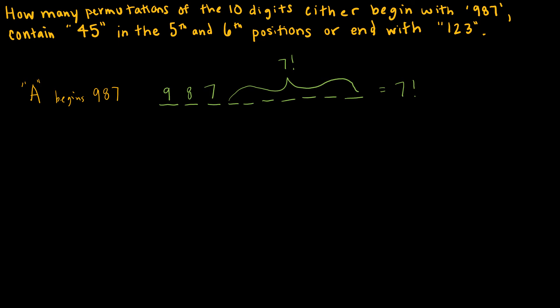The next condition says contain 4, 5 in the 5th and 6th positions, so we let B be that set. With 4 and 5 fixed in positions 5 and 6, I have 8 remaining digits that can go in any of the other 8 positions, giving 8 factorial. That means 1 could be in any one of those positions, and once 1 is set, 2 can be in any of the 7 remaining positions, and so on.